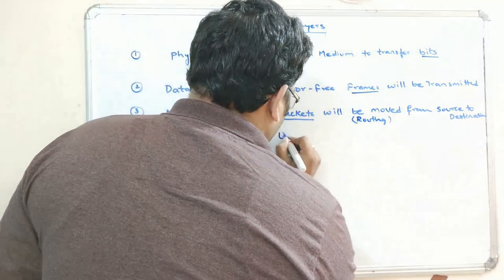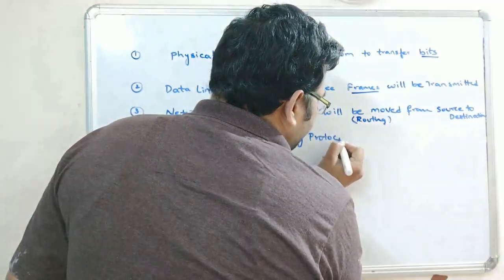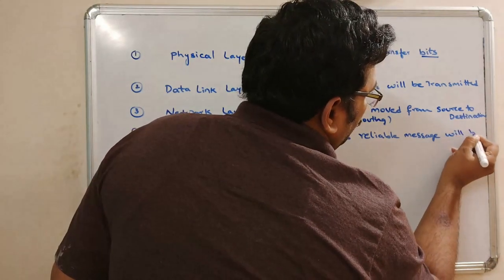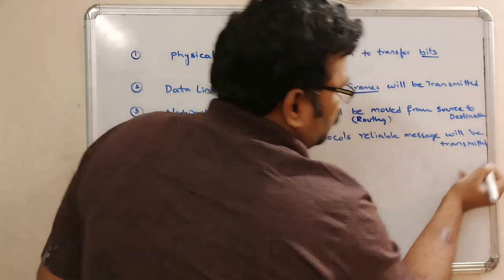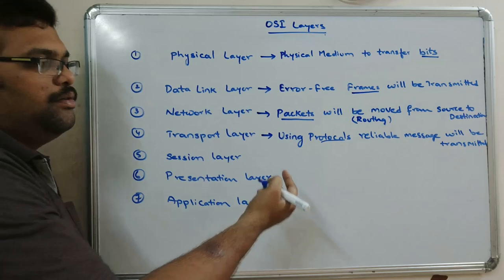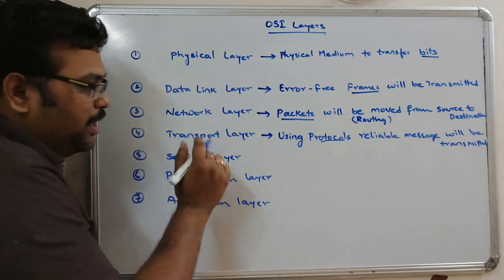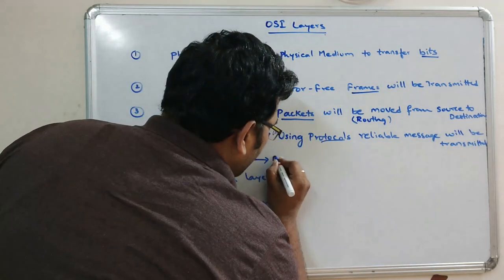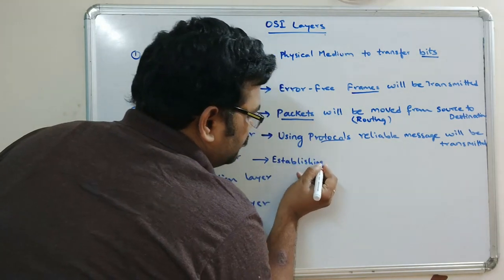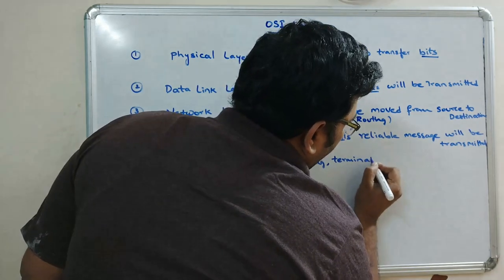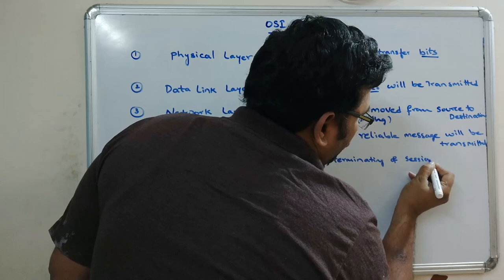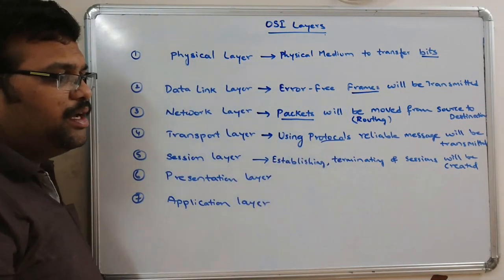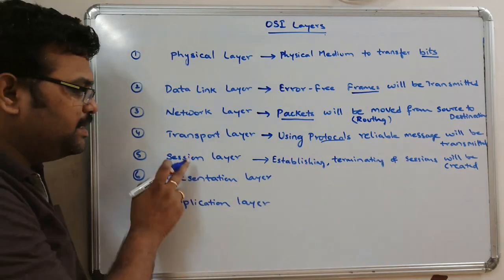In the transport layer, reliable messages are transferred using protocols. With the help of protocols, these packets are transferred reliably. In the session layer — the name itself indicates a time period we call a session — establishing and terminating of sessions occurs. A connection is established in order to communicate from one system to another, and the termination of sessions is also handled in this session layer.